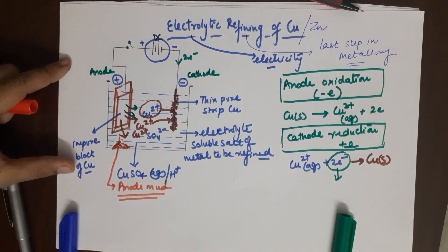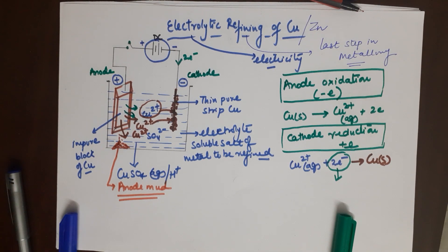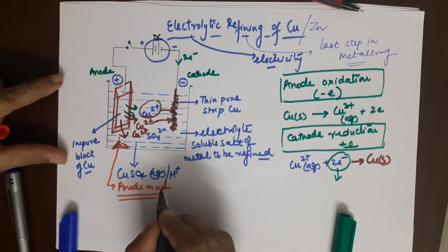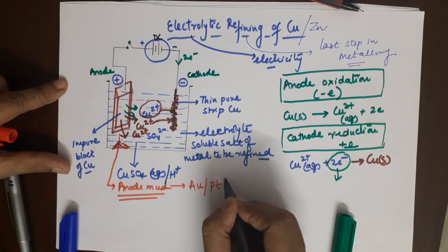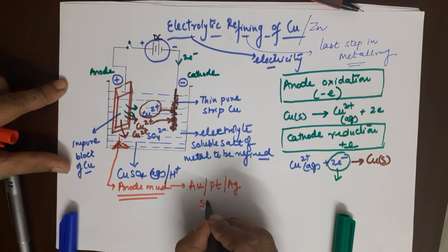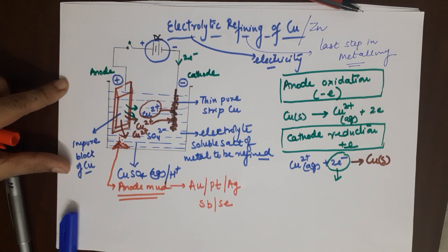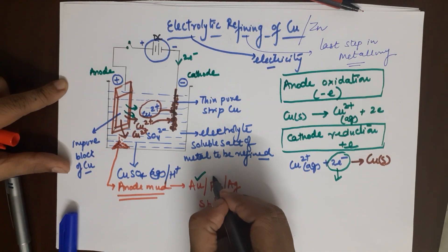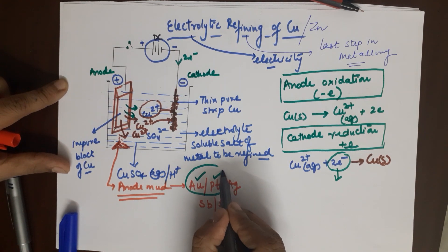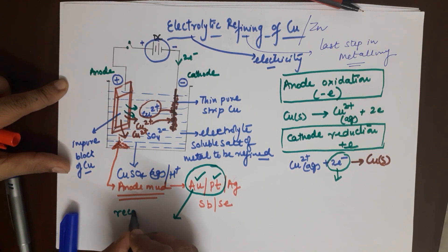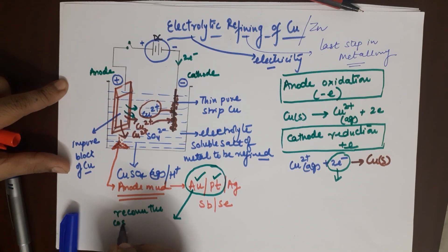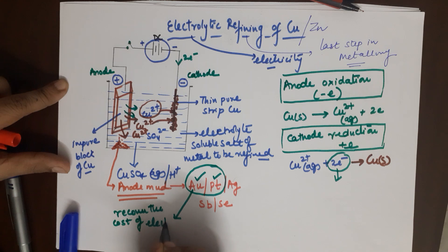This anode mud has a very high importance. Surprisingly it's mud but why is it important? Because it consists of gold, platinum, silver, and also some precious metals like antimony, selenium. But out of these the more important ones are gold and platinum because they are precious and because of their cost they help to recover the cost of electrolytic refining.